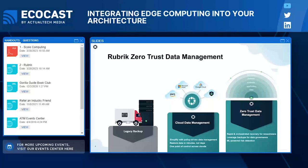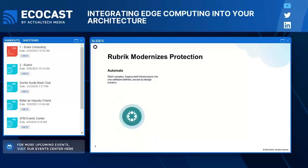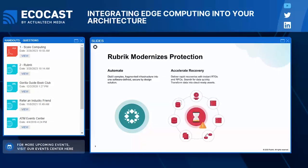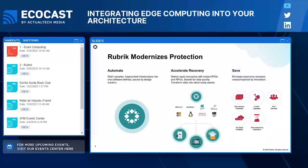For a modern data protection strategy, we collapse many pieces into one hyperconverged appliance, eliminating a lot of legacy architecture. We accelerate recovery — the ability to automate and procedurally recover the data set at scale, with SLA policy-based information. We also eliminate renewals, eliminating siloed different tiers and tool sets that you'd have for each unique data set in a different cloud. The idea is a cost-efficient approach with Rubric.